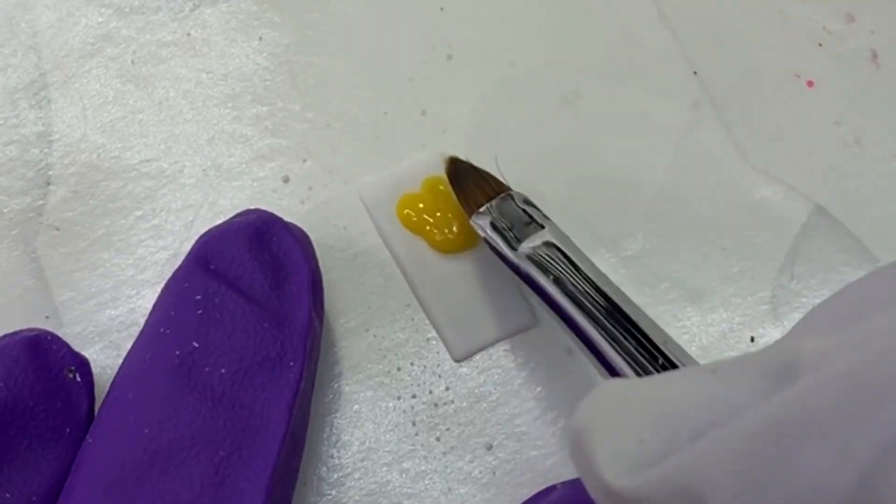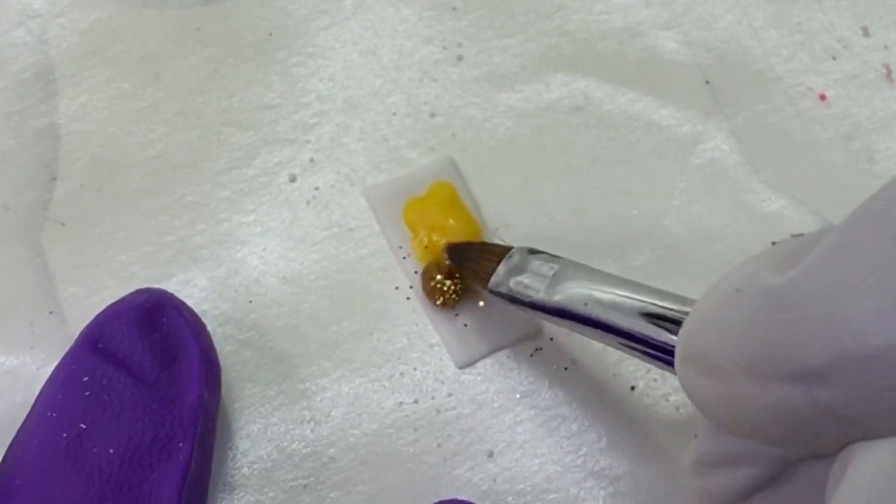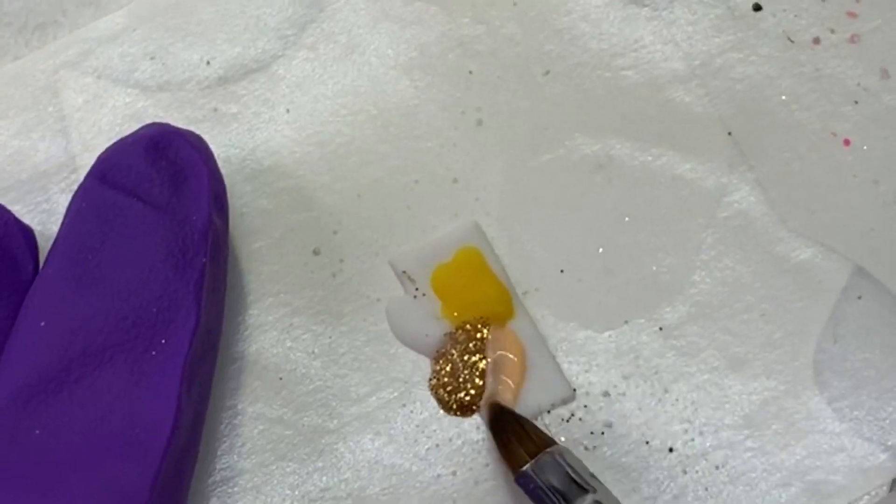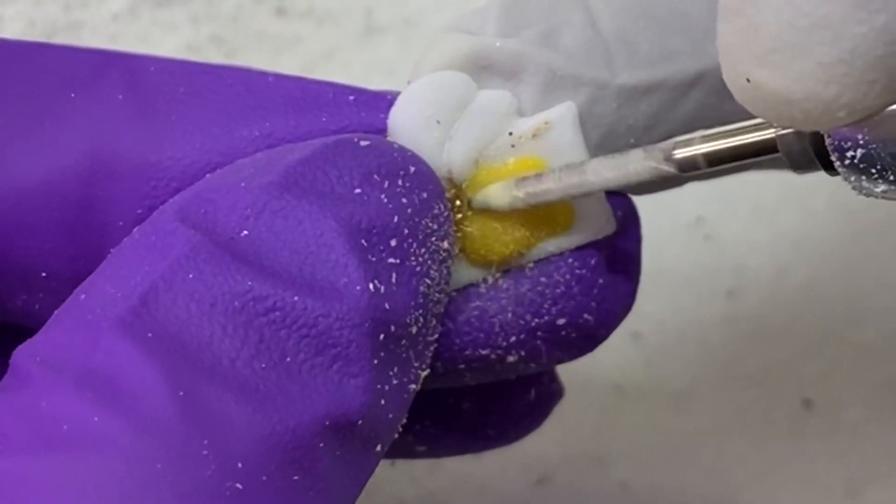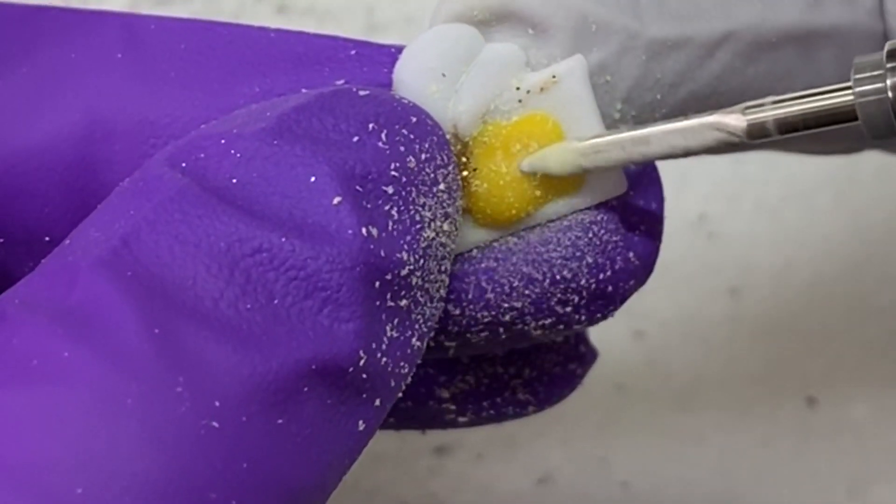This is a Koopa Troopa if you've never seen him before. He's super cute and I'm making him have a gold shell because this is not just any Koopa Troopa, this is the Koopa Troopa.